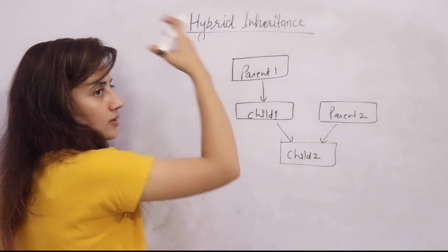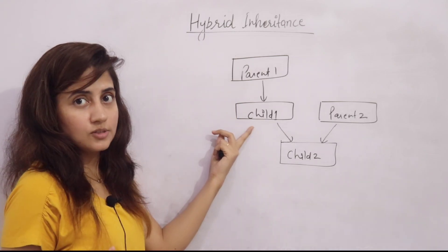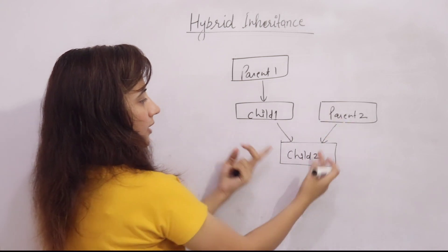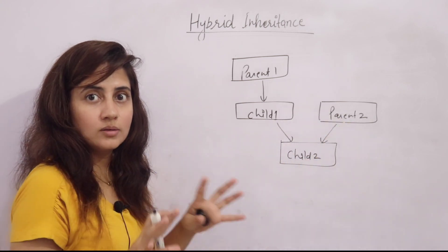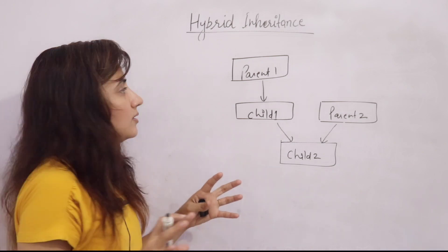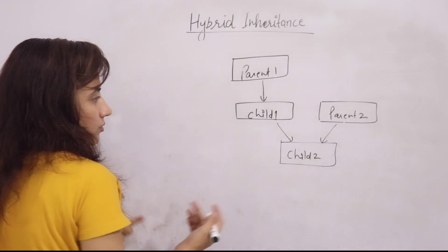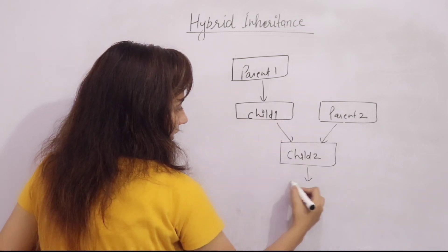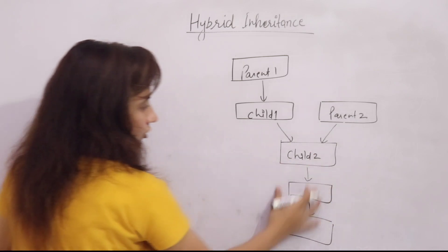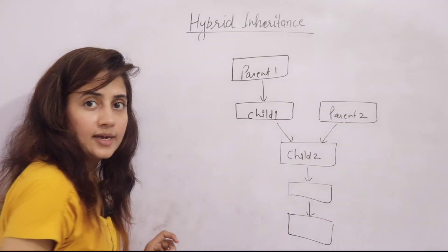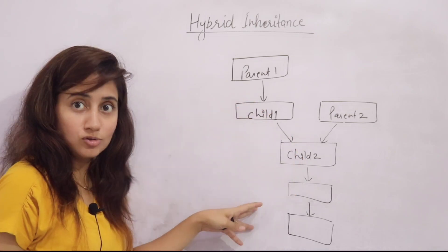Another example: grandfather, then your father, your mother, and then you. That is a combination of more than one inheritance. You could also derive one more child from there, and one more child from that — which becomes multi-level inheritance. So this is a combination of two or three types of inheritance, and that is also hybrid inheritance.